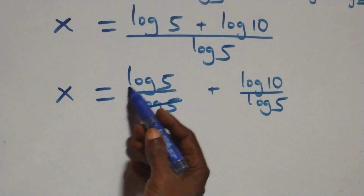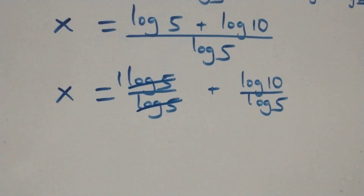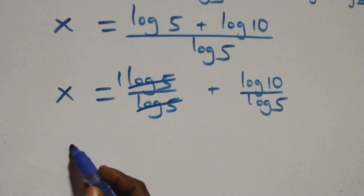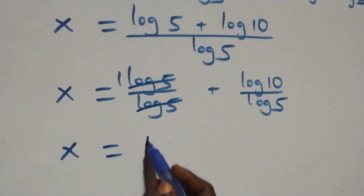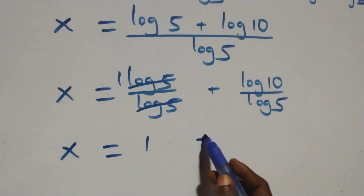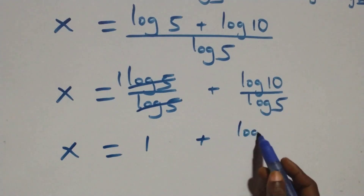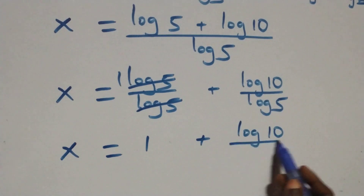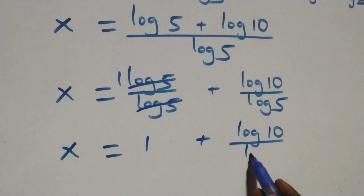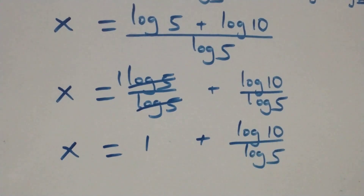Log 5 cancels each other, leaving 1. This implies x equals to 1 plus log 10 over log 5.